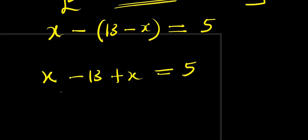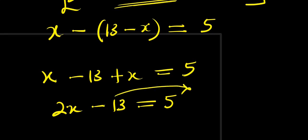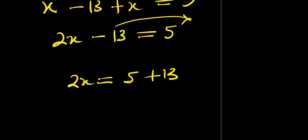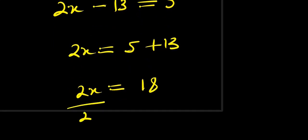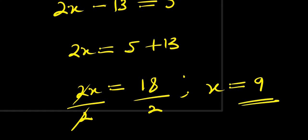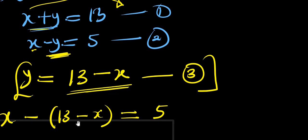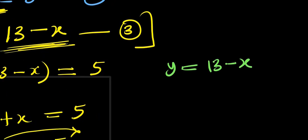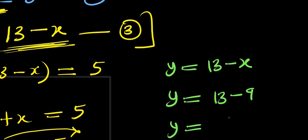Simplifying: 2x minus 13 equals 5. Moving 13 to the other side: 2x equals 5 plus 13, which is 18. Dividing by 2, x equals 9. Now solving for y using y equals 13 minus x: y equals 13 minus 9, so y equals 4.